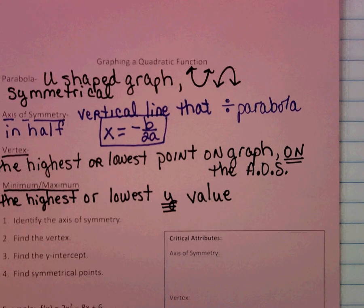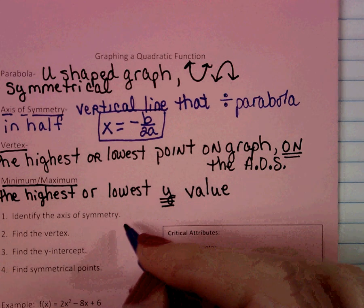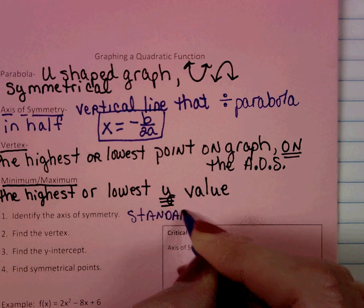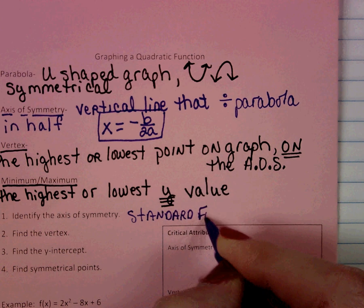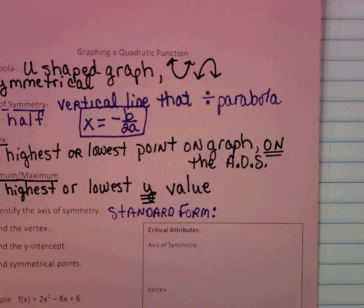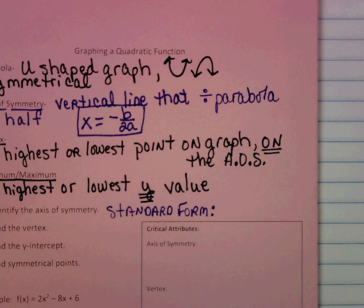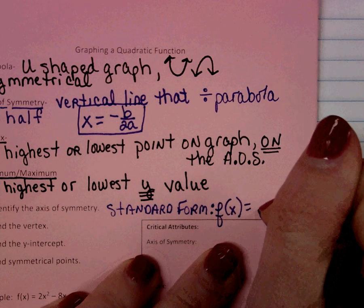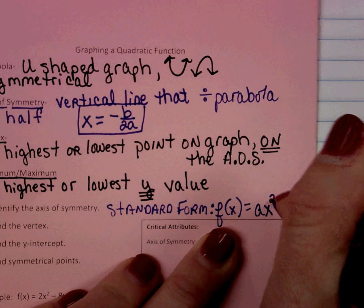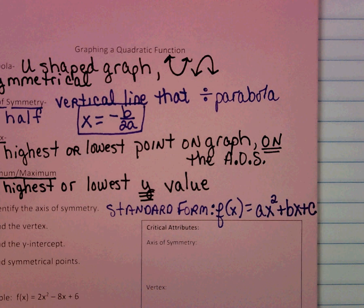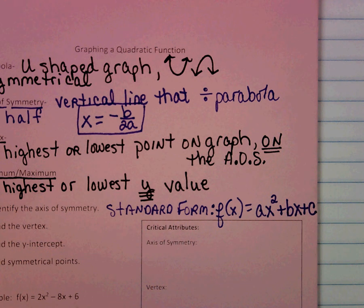One last thing: the standard form of a quadratic. We know from polynomials that standard form is in descending order. The variables are: standard form is ax squared plus bx plus c. The a, b, and c are your numbers — your coefficients or your constant term.